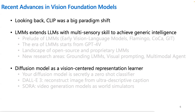The most fundamental question is how do we extract intelligence from the visual world. Looking back, CLIP still represents a paradigm shift when it was introduced in 2021. CLIP extracts information at the intersection of image and text, learning both an image encoder and text encoder at the same time. The past year has been marked by the rise of large multi-modal models.